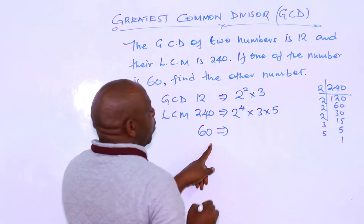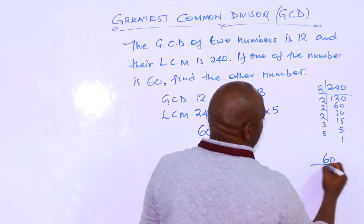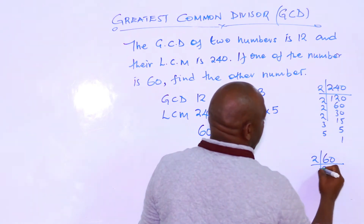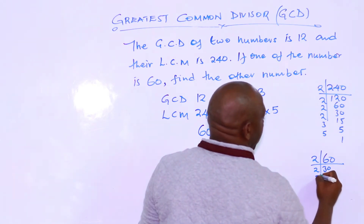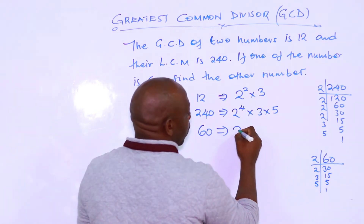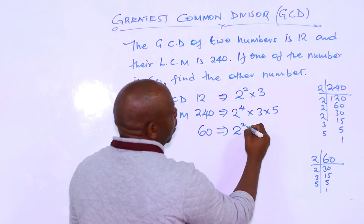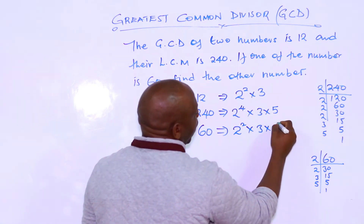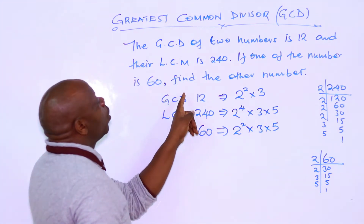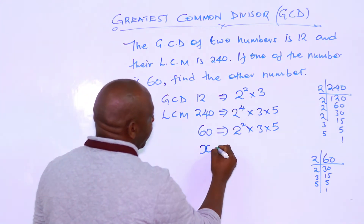Then get the factors of the first given number, which is 60: by 2, by 2, by 3, by 5: 1. So 60 equals 2 to the power 2 times 3 times 5. We are asked: what is the other number, the least possible number — we call it X.